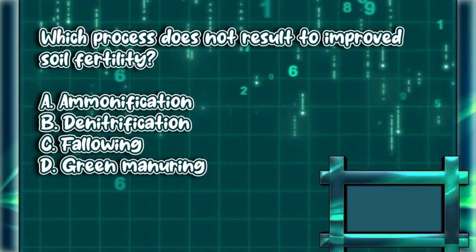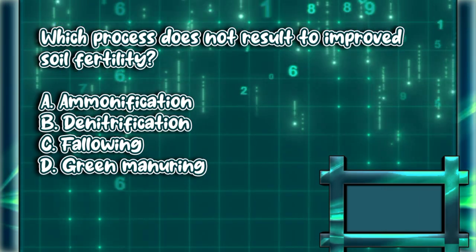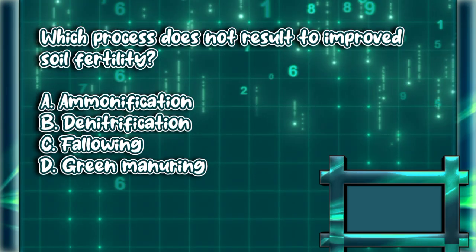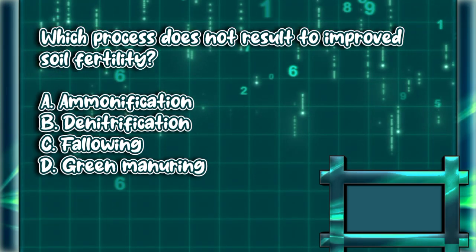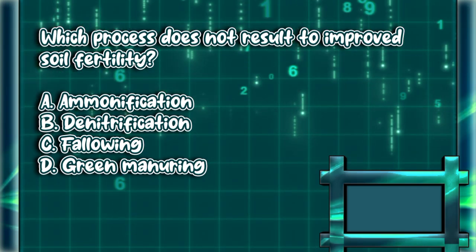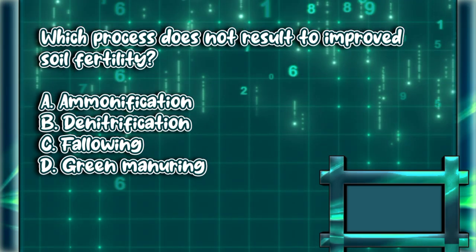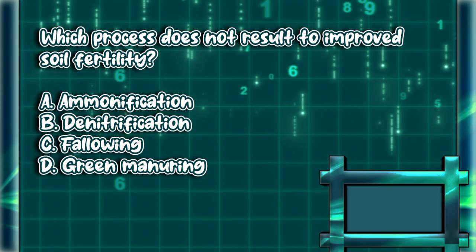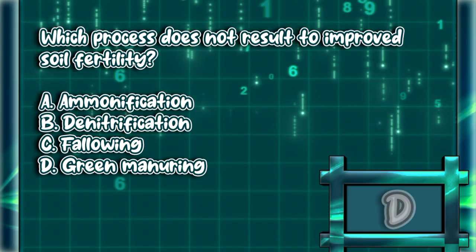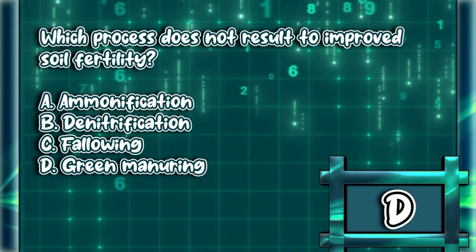Which process does not result in improved soil fertility? A. Ammonification. B. Denitrification. C. Fallowing. D. Green manuring. The answer is letter B.